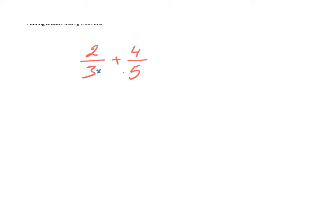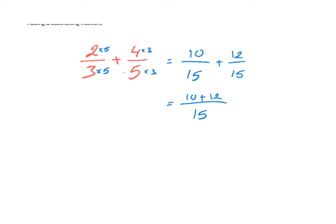So we're going to multiply by five here, and make sure you do the same thing in the numerator. And for the five, we're going to multiply by three — make sure you multiply also by three. So the answer is going to be 10 over 15 plus 12 over 15. Now we have the same denominator. We keep the denominator and add the numerators: 10 plus 12, and that would be 22 over 15.